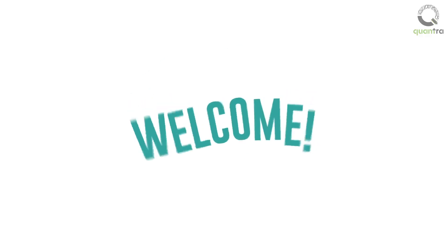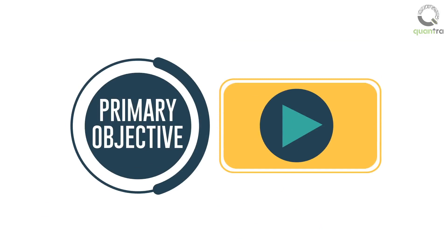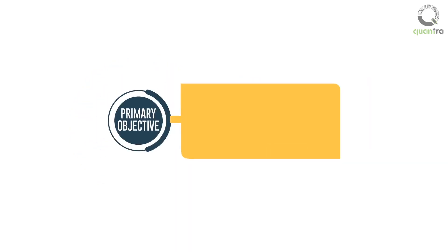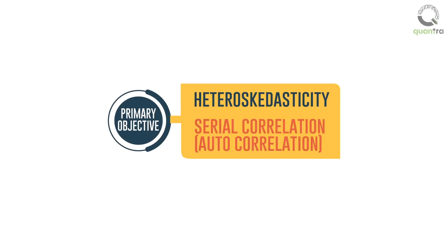Welcome to this video lecture. The objective of this video lecture is to cover the required concepts for understanding the ERIMA and GARCH models. The concepts we will learn are: 1. Heteroscedasticity, and 2. Serial correlation or autocorrelation.